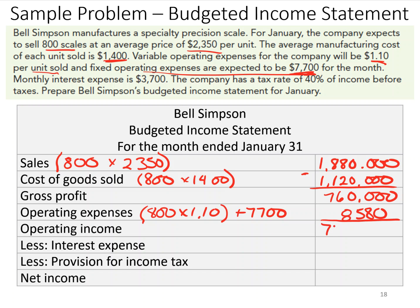Operating income then is $751,420, minus interest expense. Interest expense is given — monthly interest expense is $3,700.